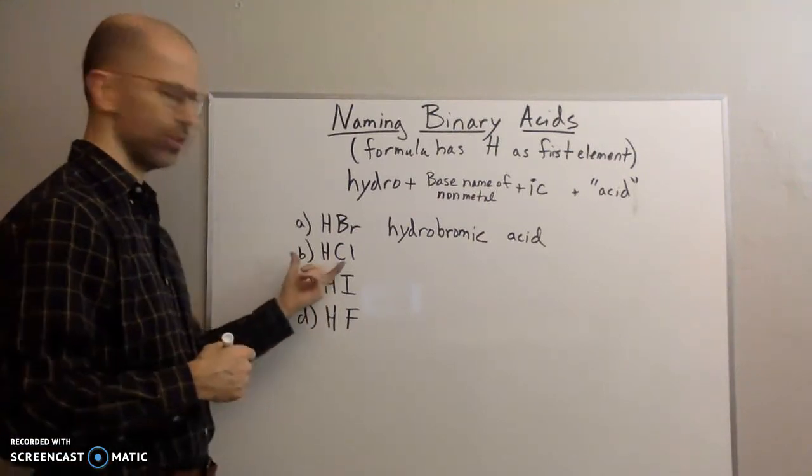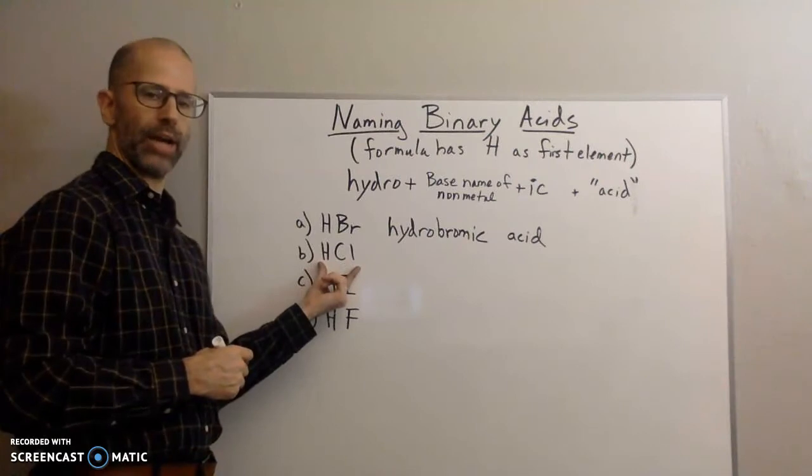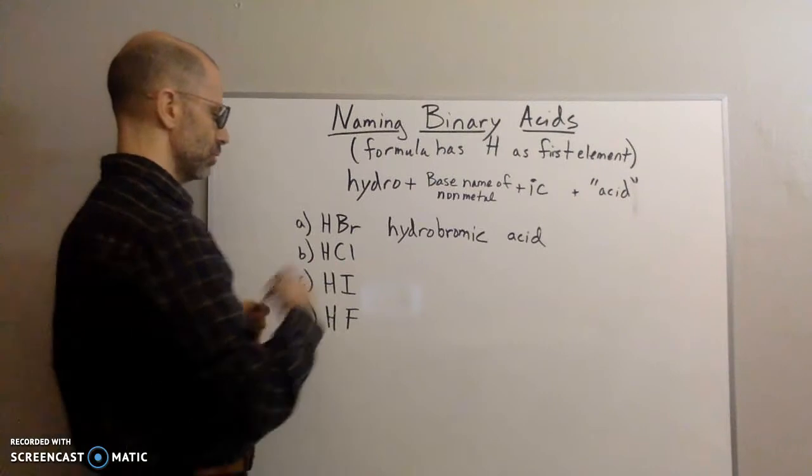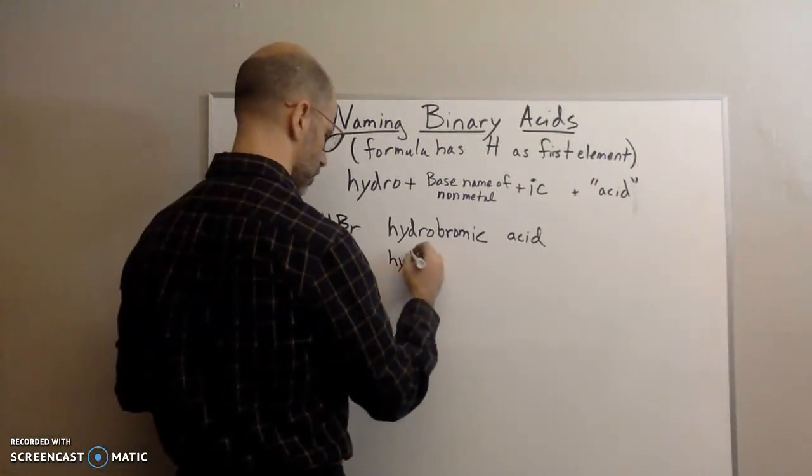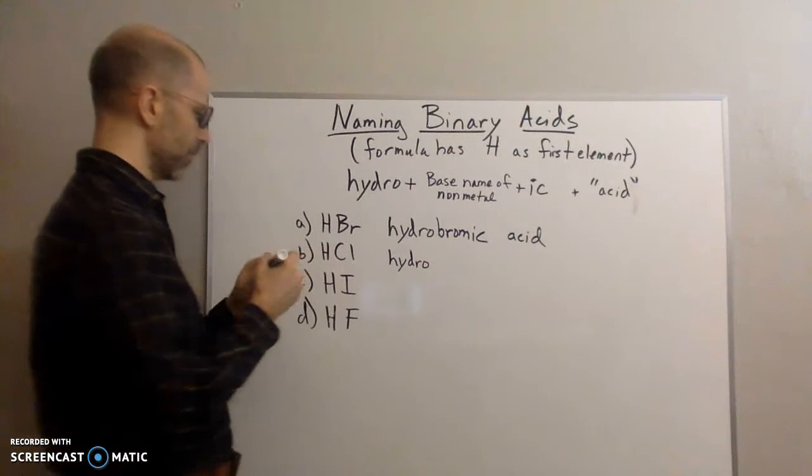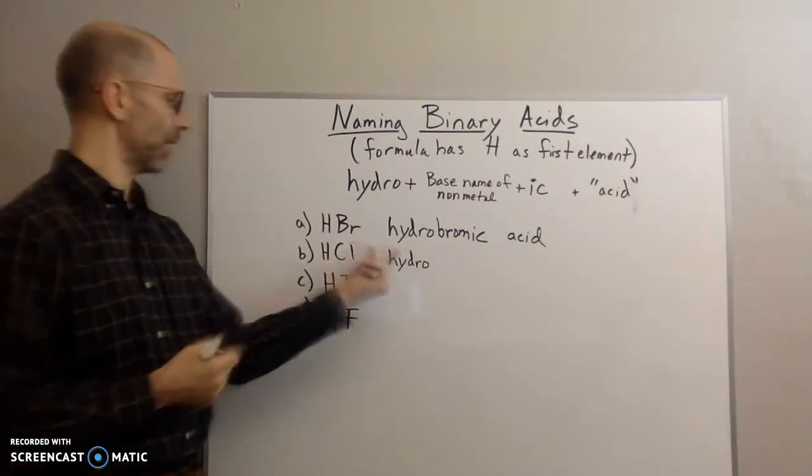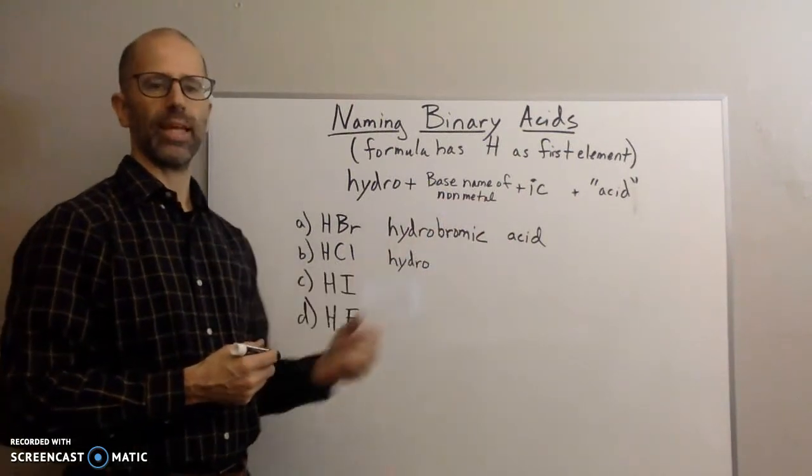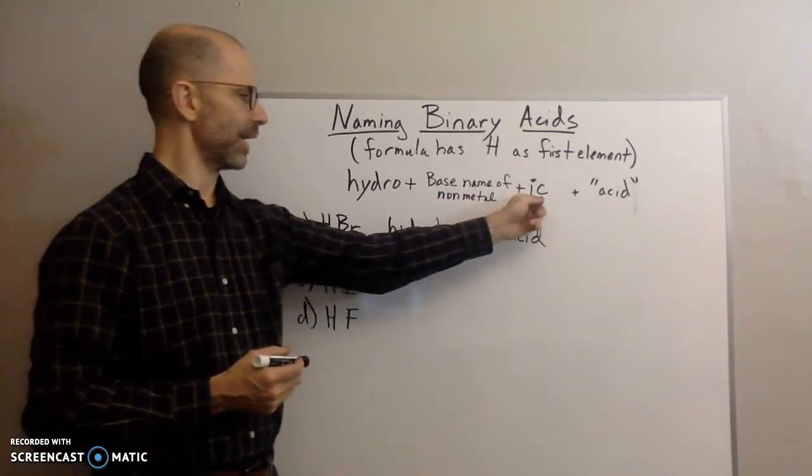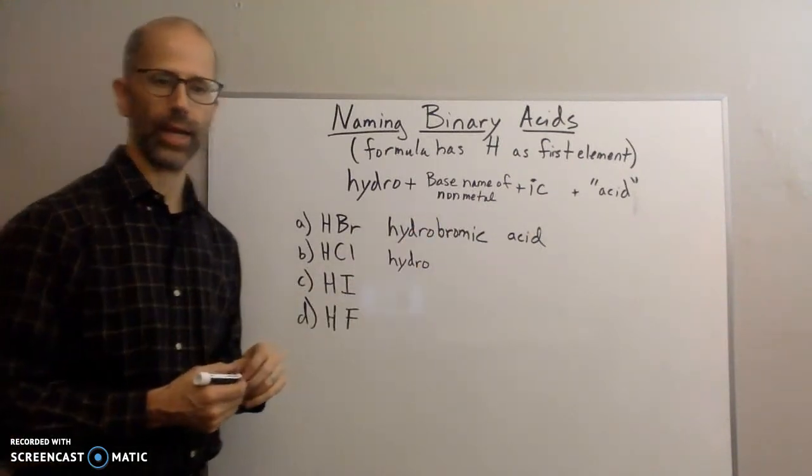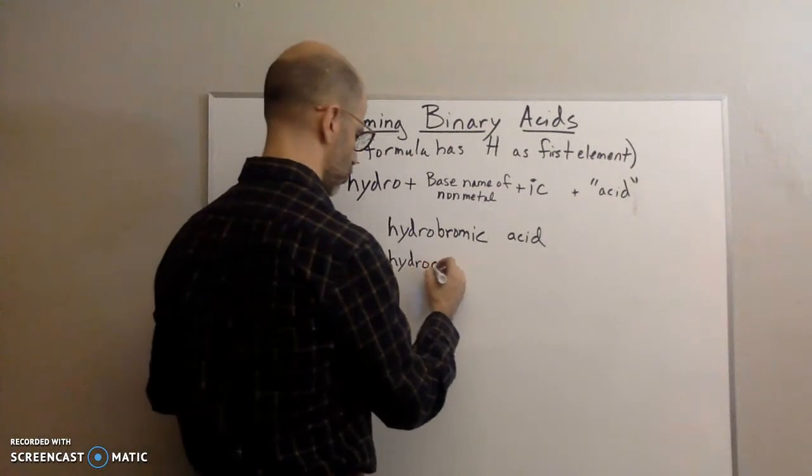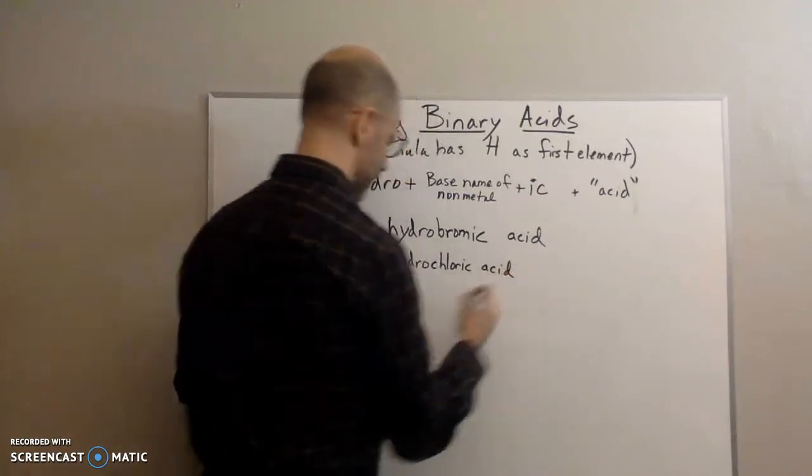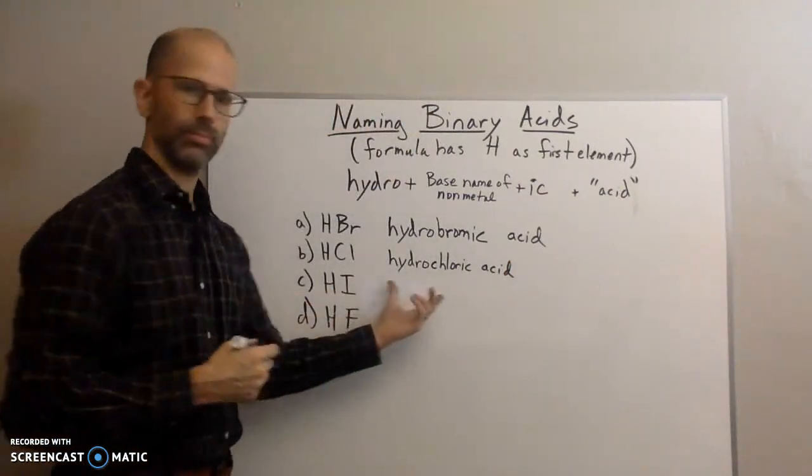Okay, so let's do the next one. Again, it's a binary acid. I have hydrogen and chlorine, so I'm going to write hydro for the hydrogen. I have chlorine, so now I'm going to add the base name, chlorine. I'm going to drop the ending, I-N-E, add ick. So chlorine goes to chloric. So this is going to be hydro-chloric acid. There you go.